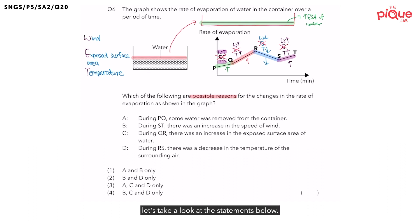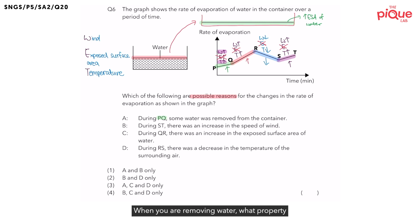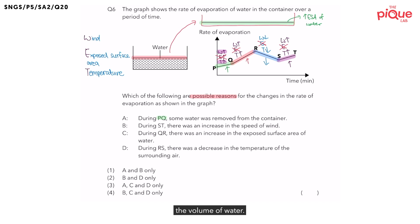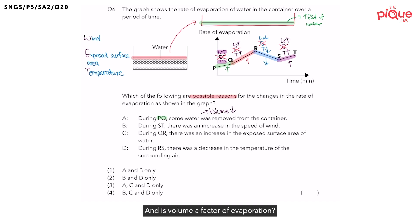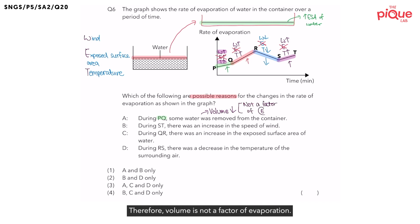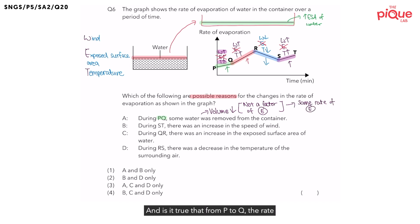Now that we are done analyzing the graph, let's look at the statements. Statement A: during PQ, some water was removed from the container. Removing water changes the volume of water. Is volume a factor of evaporation? There's no V in WET, so volume is not a factor. If volume is not a factor, changing it does not affect the rate of evaporation — the rate remains the same. But from P to Q the rate actually increased, so statement A is wrong.